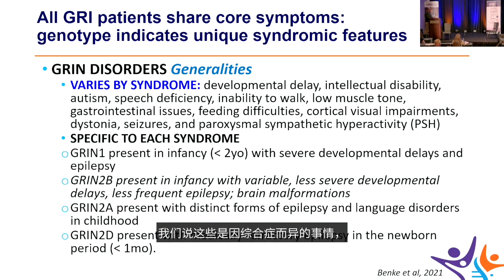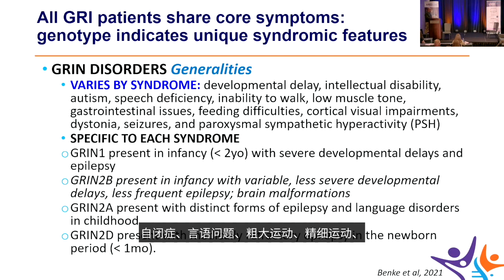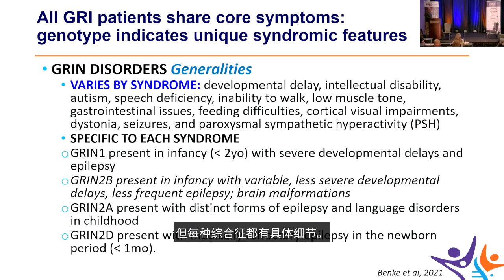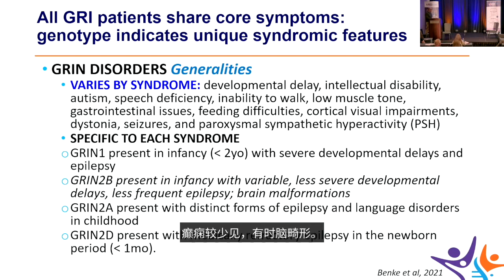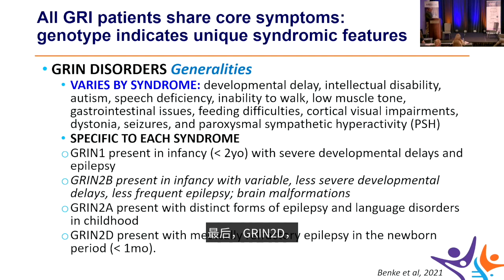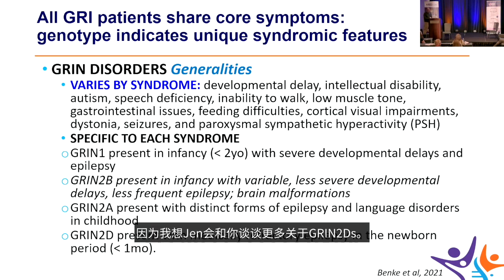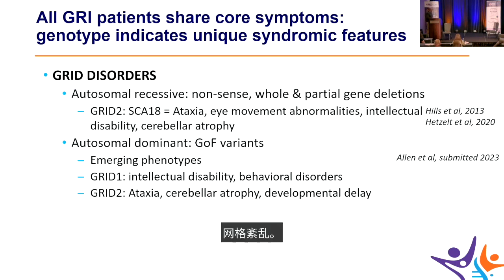Specific generalizations: GRIN1 presents in infancy with severe developmental delays and epilepsy; GRIN2B presents in infancy with variable, less severe delays and less frequent epilepsy, sometimes with brain malformations; GRIN2A presents with distinct epilepsy and language disorders in childhood; GRIN2D presents with medically refractory epilepsy in the newborn period. Dr. Bain will elaborate further on GRIN2B.